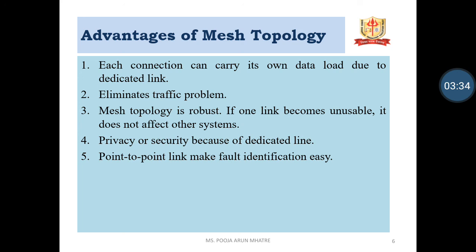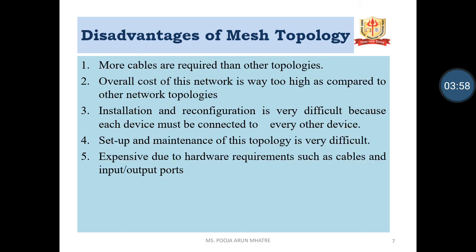Advantages of Mesh Topology: Each connection can carry its own data load due to the dedicated link. It eliminates traffic problems. Mesh topology is robust — if one link becomes unusable, it does not affect any other link or the whole system. Privacy and security are ensured because of the dedicated point-to-point link, which also makes fault identification easy. Disadvantages: More cables are required than other topologies. The overall cost of this network is too high compared to other network topologies. Installation and reconfiguration is very difficult because each device must be connected to every other device, and the setup and maintenance of this topology is very difficult.